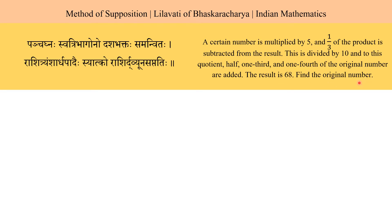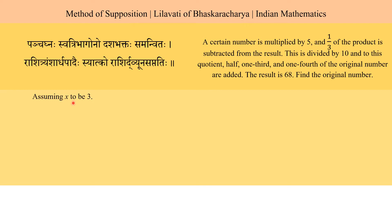The first step in the method of supposition is to assume the original number. In this case, let us assume the original number to be 3. So we assume x to be 3 and then continue with the steps as given in the question.